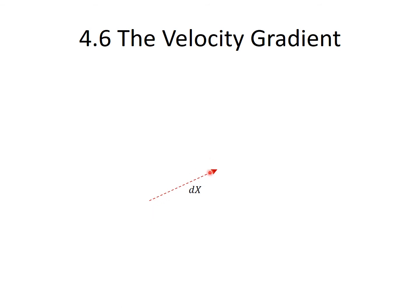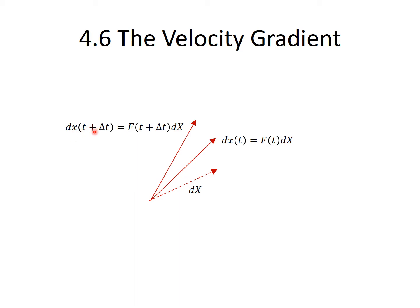Consider a material vector dX at time t. We can assume that its image under the mapping induced by the deformation gradient is given by dx at time t, which is equal to the deformation gradient F at time t multiplied by the vector dX. As time evolves and t becomes t plus delta t, the vector dx changes its magnitude and direction and becomes dx at time t plus delta t, which is equal to the new deformation gradient F at time t plus delta t multiplied by the vector dX. The difference between the two is equal to the rate of change of the vector dx with respect to t multiplied by delta time.